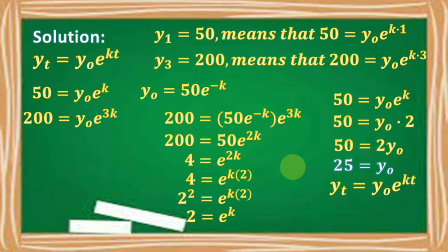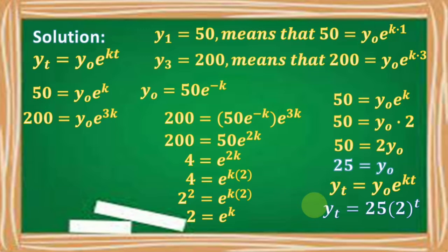Using the equation y_t = y₀ · e^(kt), we can now find the exponential growth equation. Simply replace y₀ with 25 and replace e^(k) with 2. So we have y_t = 25 · 2^t.